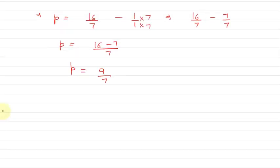Hence, the value of p is 9 upon 7, and q equals 8 upon 7. I hope you understood the explanation. Thank you.